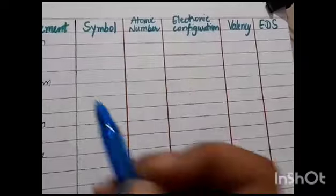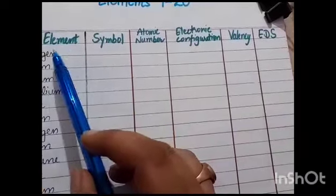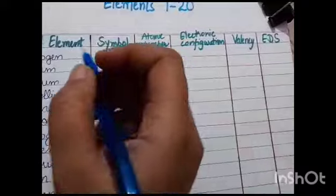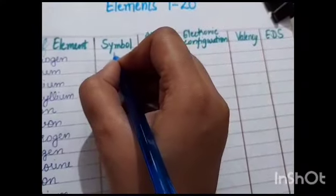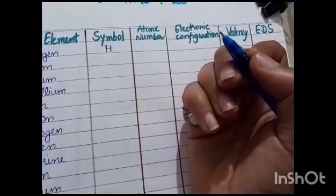Today we are going to study the element symbol, atomic number, and their electronic configuration. For hydrogen, the symbol is H, capital H.